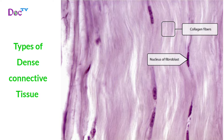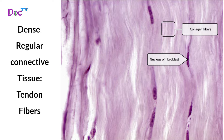Dense regular connective tissue, seen in tendons, has a matrix with collagen and elastic fibers, little ground substance and few cells, most of which are fibroblasts. Closely packed bundles of collagen fibers run parallel, which allows tendons, ligaments, aponeurosis and fascia to withstand significant unidirectional tension. This tissue supports the skeletal system; tendons attach skeletal muscle to bone and ligaments attach bone to bone.